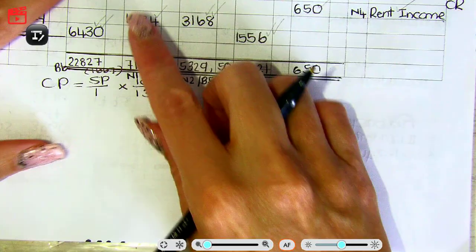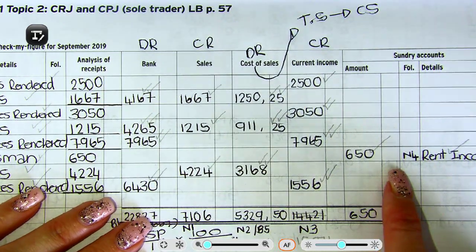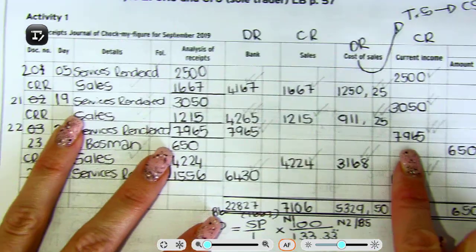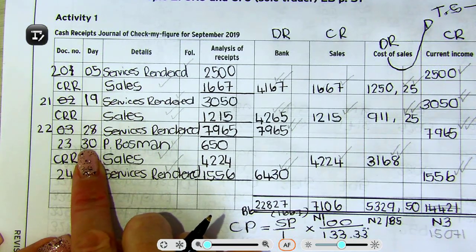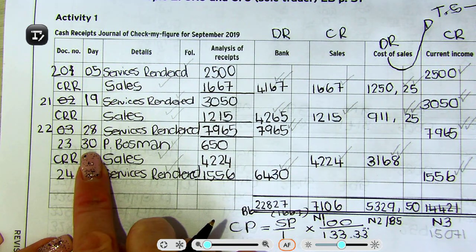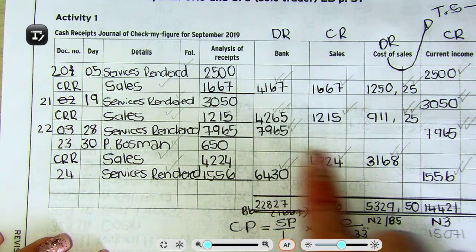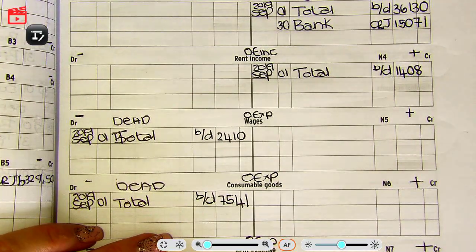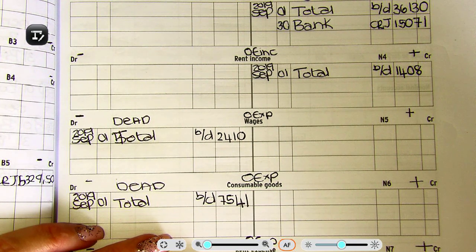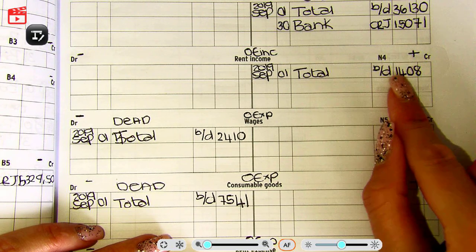Now we've posted all of these columns, but we still have sundry. We have one sundry entry. Remember, sundry entries are posted to the general ledger on the specific date that they happened, and we can see that this rent income was received on the 30th. Rent income is also classified as owner's equity income.